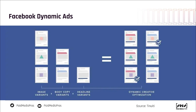Facebook takes all of the elements that you provide — whether image, body copy, headlines, descriptions, or calls to action — and combines them dynamically to serve to individual users on the Facebook platform. This is very similar to a responsive search ad on Google or Microsoft Ads, but with all of the ad assets you're able to use on Facebook.